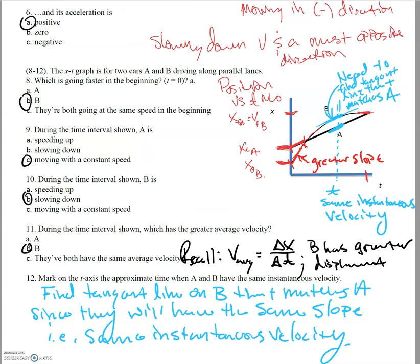For question twelve, we need to mark on the axis where A and B have the same instantaneous velocity. The key is they must have the same slope at that point. Find the point on B's curve where the tangent line has the same slope as A's diagonal line — that is where they share the same instantaneous velocity.